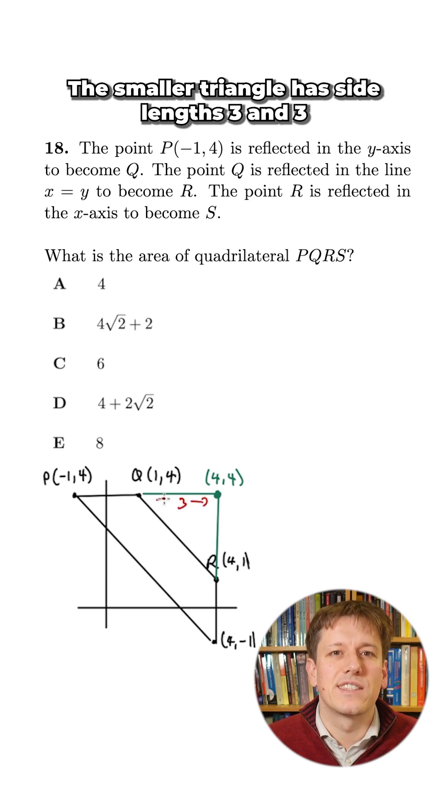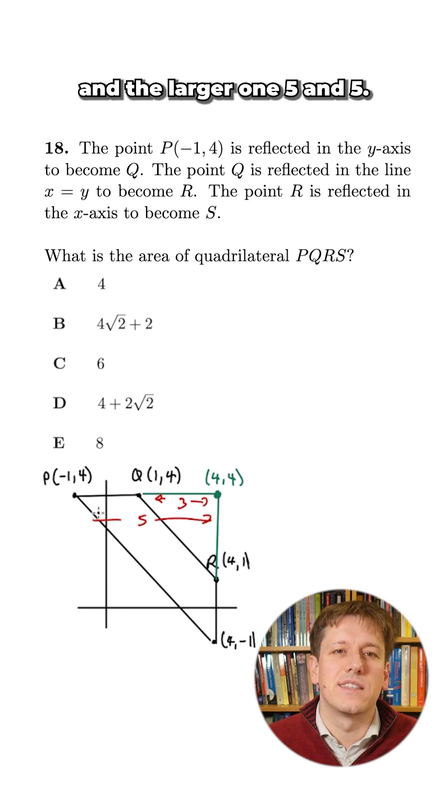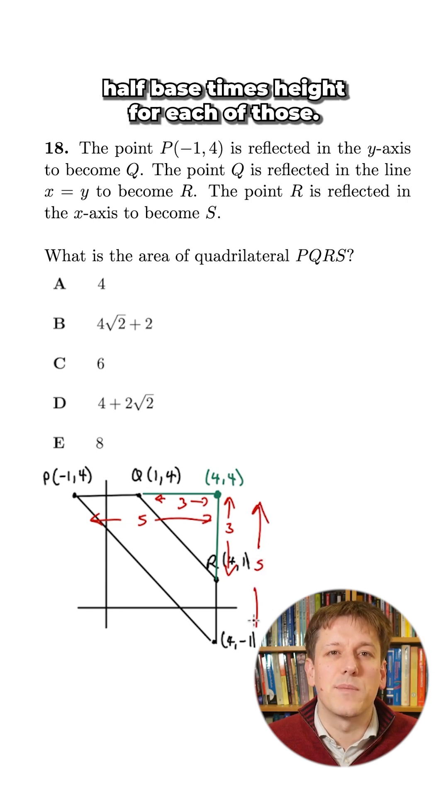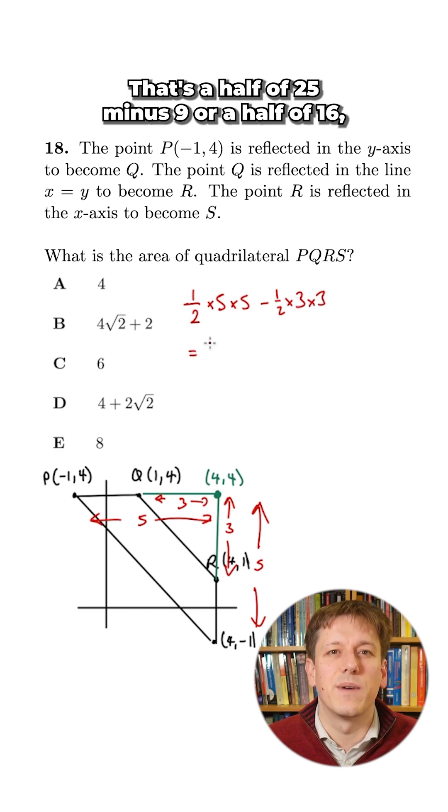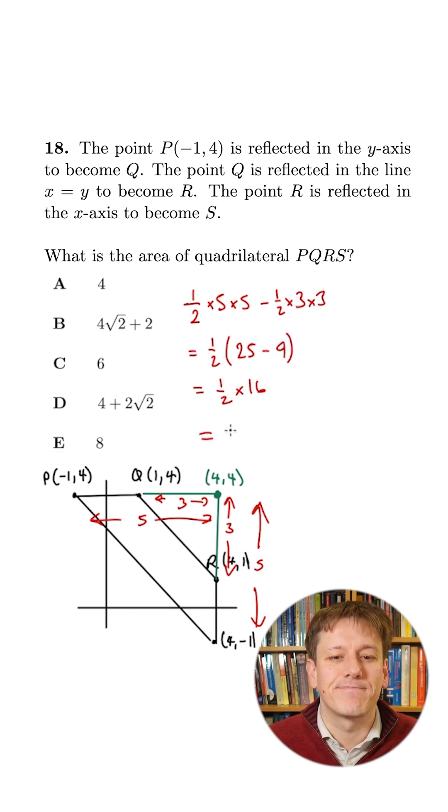The smaller triangle has side lengths 3 and 3 and the larger one 5 and 5 so I just need to do a half base times height for each of those. A half times 5 times 5 minus a half times 3 times 3, that's a half of 25 minus 9 or a half of 16 which gives us 8 and so the answer here is E.